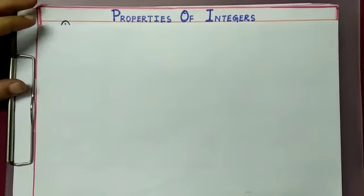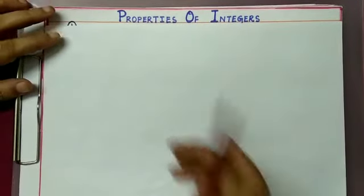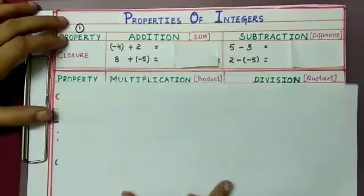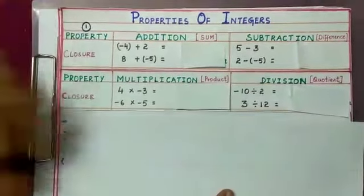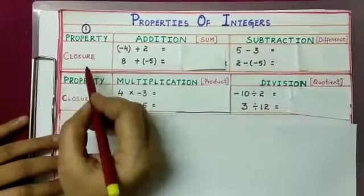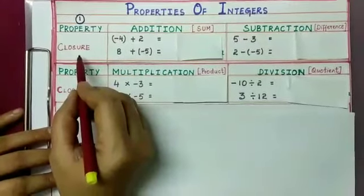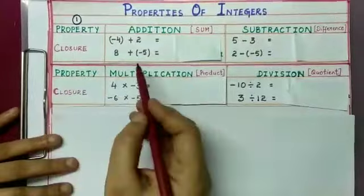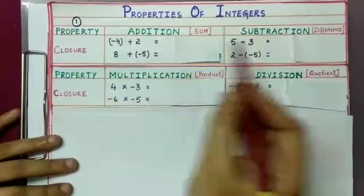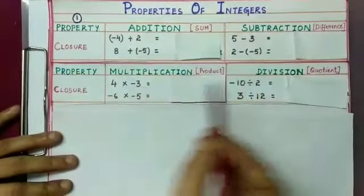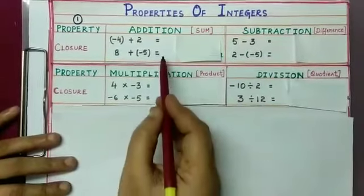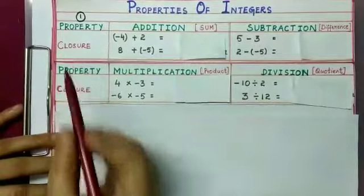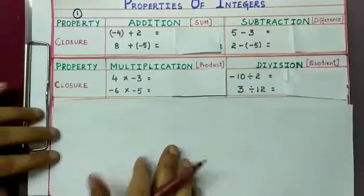In today's session we discuss a very important concept: properties of integers under addition, subtraction, multiplication, and division. Let us learn the first property — the closure property. What is closure property? Take any two integers; if you add, subtract, multiply, or divide them and the result is an integer, then we say that integers follow the closure property.